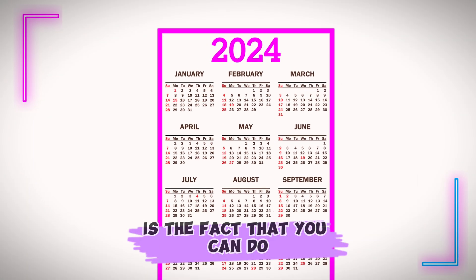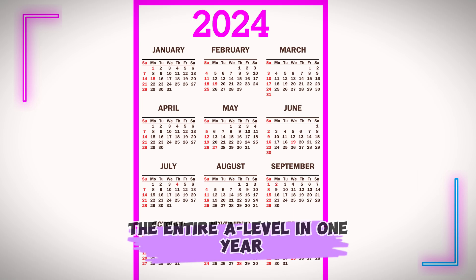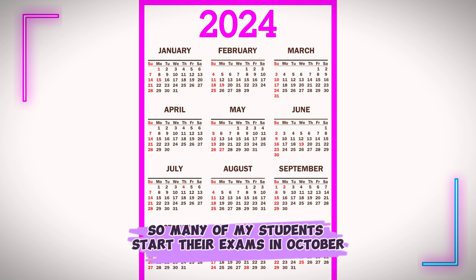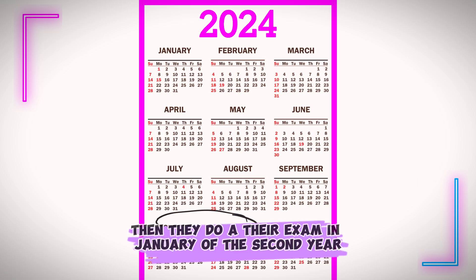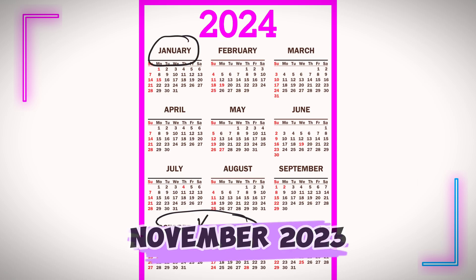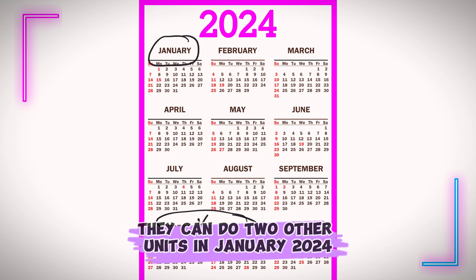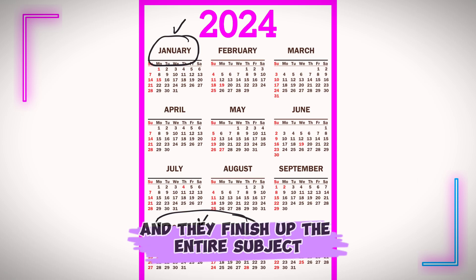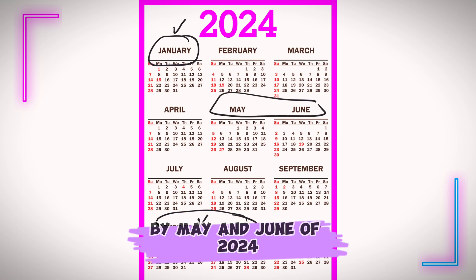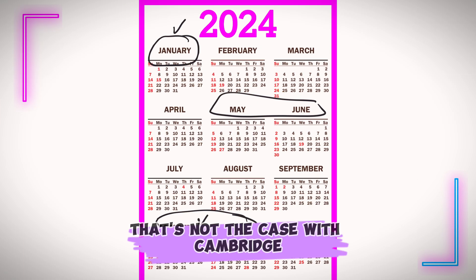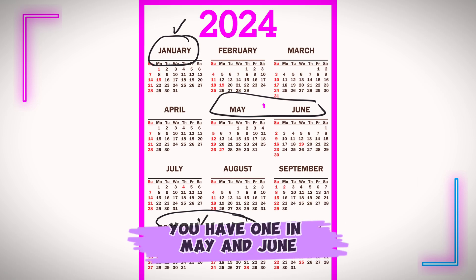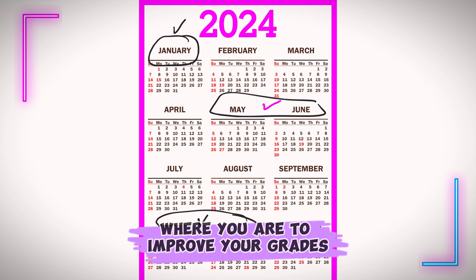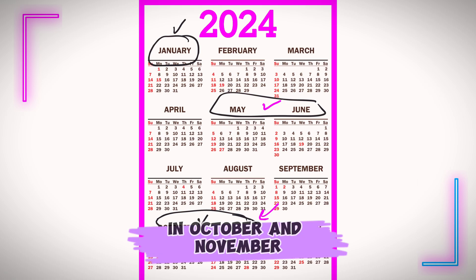Another advantage of EdExcel is that you can complete the entire A-level in one year. Many students start their exams in October or November of the first year, do two more units in January of the second year, and finish by May and June — all within roughly 8 months. Cambridge only has two exam sessions: May/June, and October/November for grade improvement.